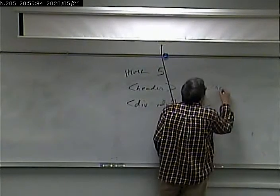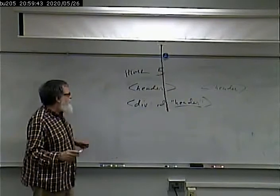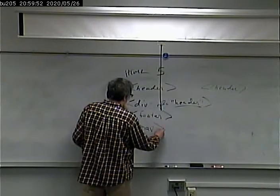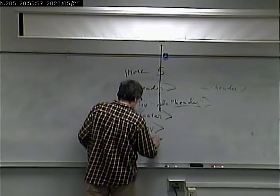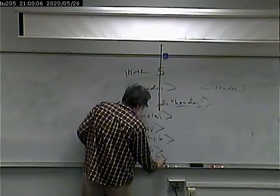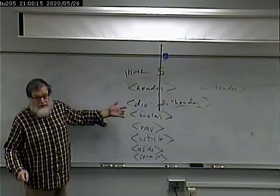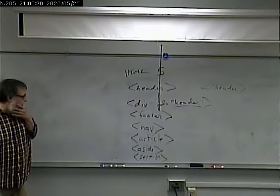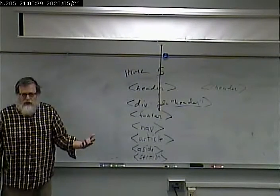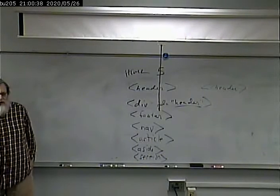In HTML5, we have a header tag. In HTML4, we might have done div ID equals header and then styled the ID header a certain way. In HTML5, you can replace that with a header tag — not to be confused with the H1 through H6 tags or the head tag, but it's meant to be like the header of the page. In addition, we also have a footer tag, a nav tag, an article tag, an aside tag, and a generic section tag.